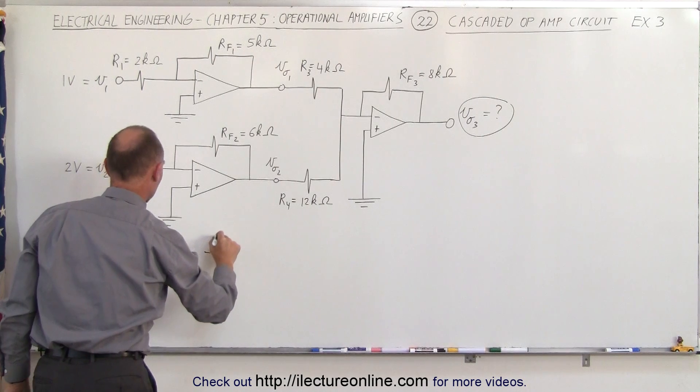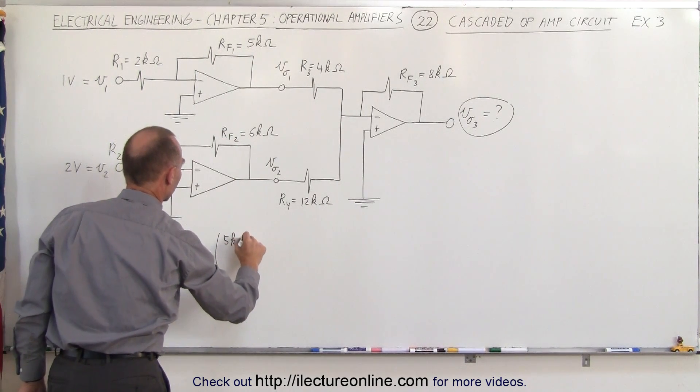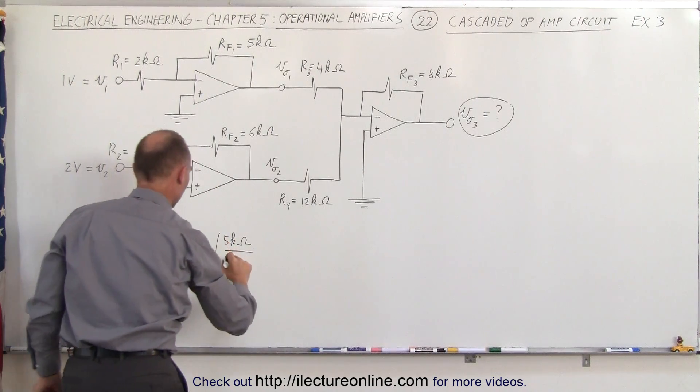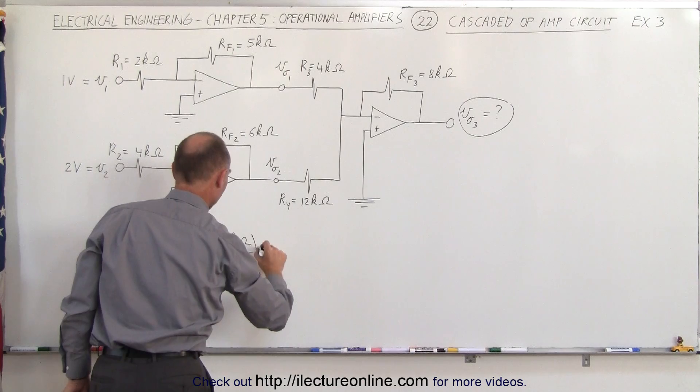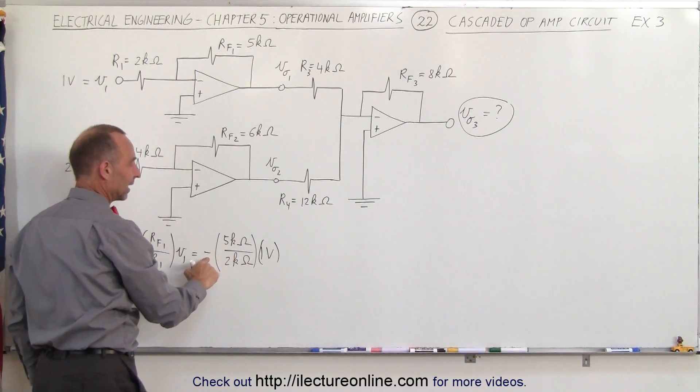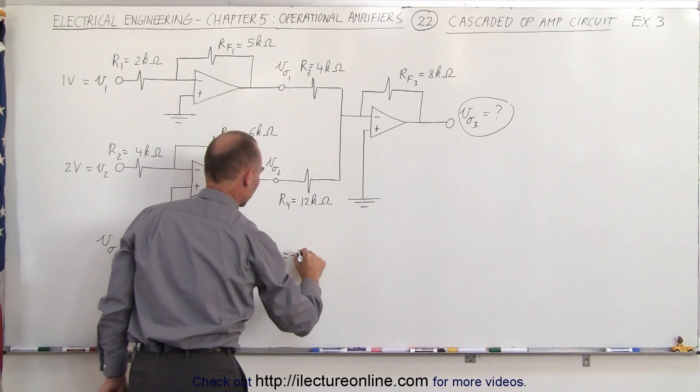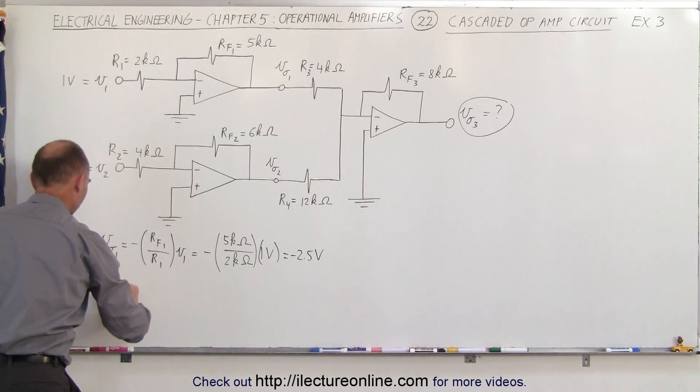And so this is equal to minus the ratio of 5 kilo ohms to 2 kilo ohms times V1, which is 1 volt. You can see that the ratio here is 2.5 times the negative times 1 volt, which is equal to minus 2.5 volts.